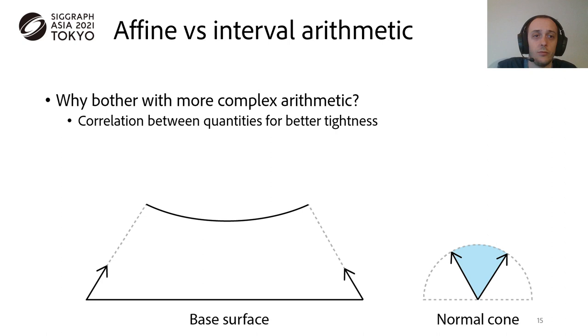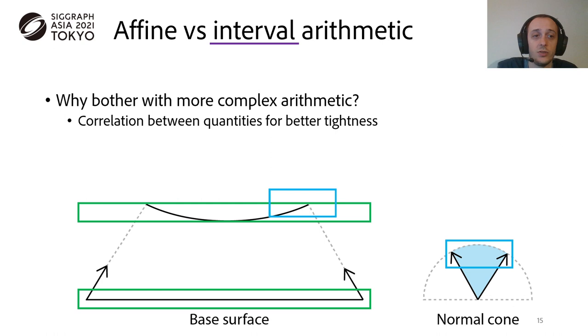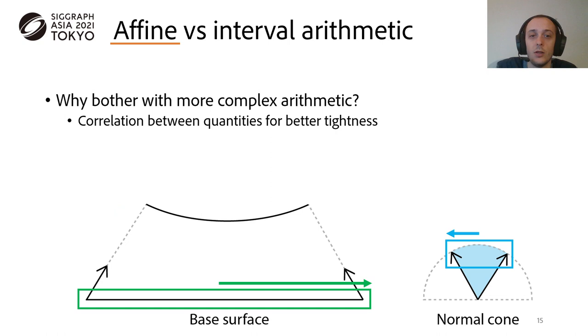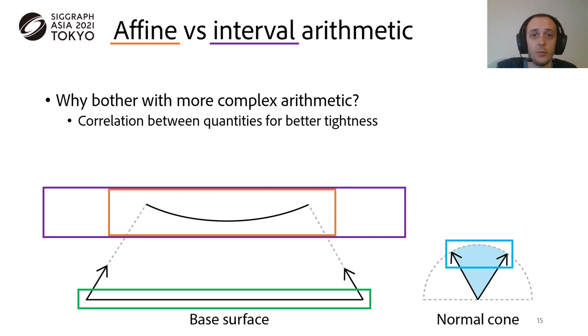We could ask ourselves the question of why using this complex arithmetic instead of, for example, a simpler interval arithmetic, and the reason for that is that our quantities have some correlation, and taking this correlation into account leads to tighter bounds. So looking at this example of a base surface and its corresponding normal cone, with their respective bounds being represented as colored boxes. If we combine these bounds using interval arithmetic, we basically translate the blue box over every possible green box location, which leads to a not so tight bounding region. But in this situation, if we go from left to right on the base surface, the normal points from right to left, so if we combine the two using affine arithmetic, some cancellation happens, and we have much tighter bounds than using interval arithmetic.